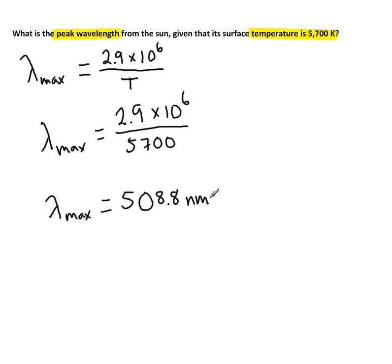Whenever you look up Wien's law, they would tell you what the units are going to turn out to be, since you can't cancel units through the equation.